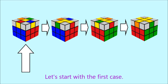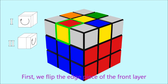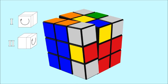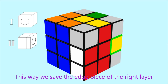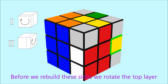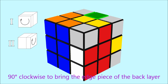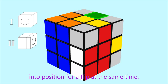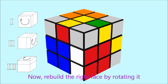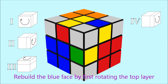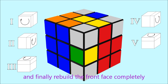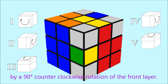Let's start with the first case. First, flip the edge piece of the front layer by rotating the front layer 90 degrees clockwise, followed by a 90 degrees clockwise rotation of the right layer. This saves the edge piece of the right layer into the middle layer, but messes up the front and right face. Before rebuilding these sides, rotate the top layer 90 degrees clockwise to bring the back layer edge piece into position for a flip at the same time. This messes up the blue face a bit more, so we need to take care of it. Now rebuild the right face by rotating it 90 degrees counterclockwise. Rebuild the blue face by rotating the top layer 90 degrees counterclockwise, and finally rebuild the front face completely by a 90 degrees counterclockwise rotation of the front layer.